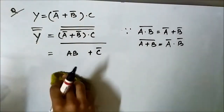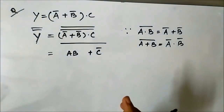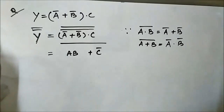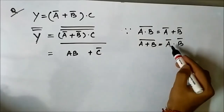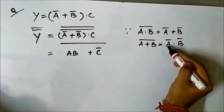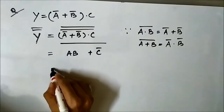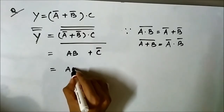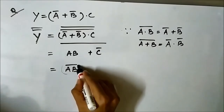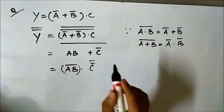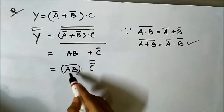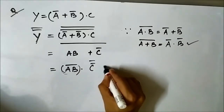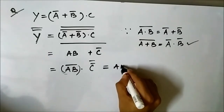At any point if you do not understand something, please pause the video, practice it in rough, and rewind to the place where the doubt arose. Now again we have to remove or modify this OR sign into an AND sign. So again we will use the second De Morgan's theorem here to convert it into AND form. It will become AB complement AND C complement complement — we have used the second De Morgan's theorem: AB plus C whole complement becomes AB complement AND C complement complement.